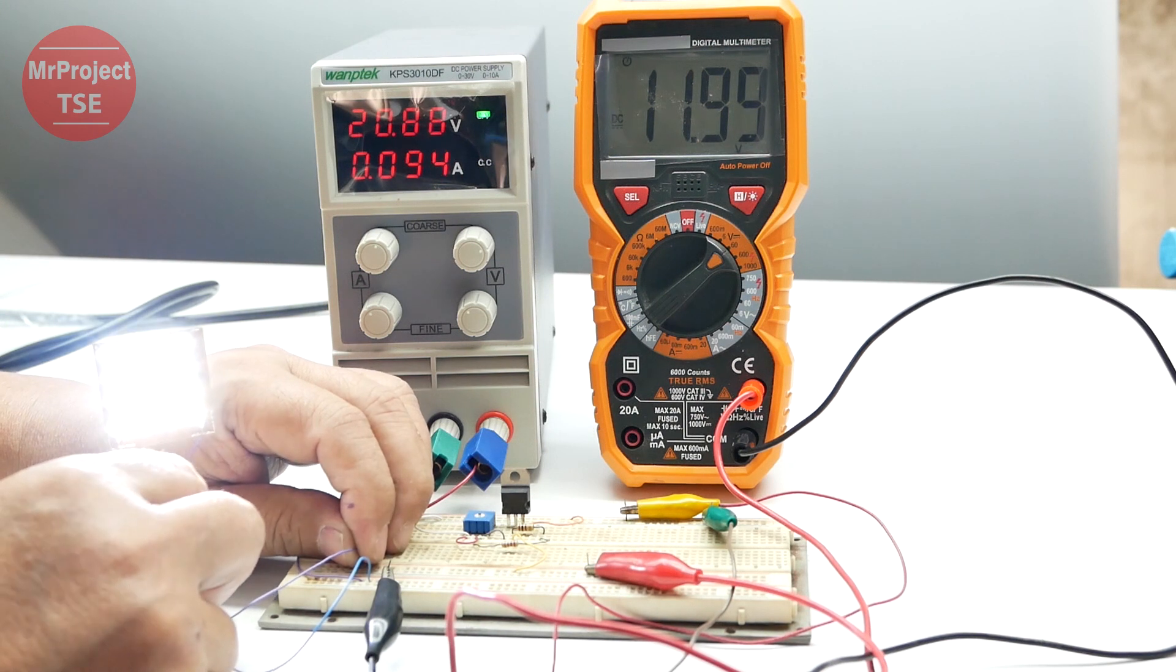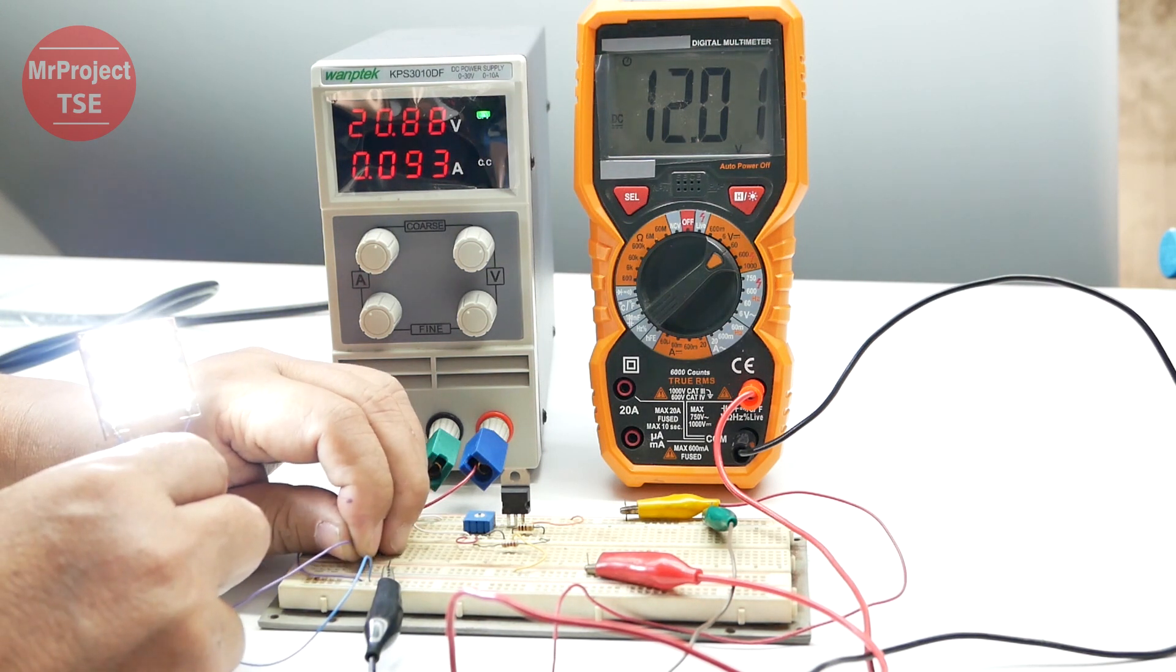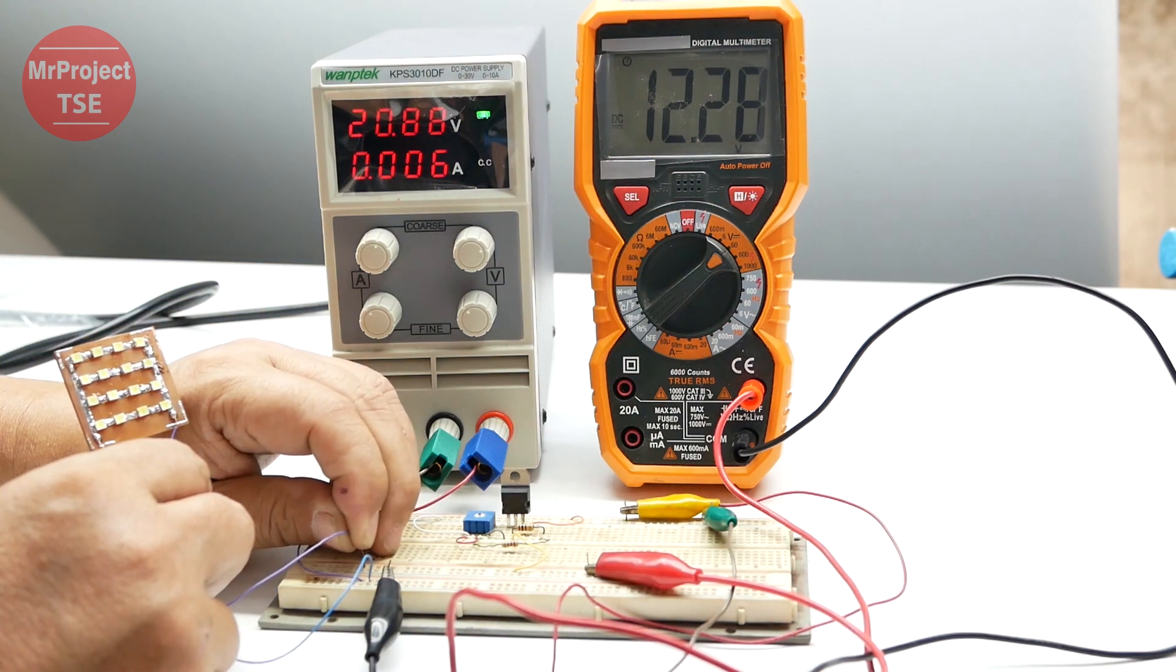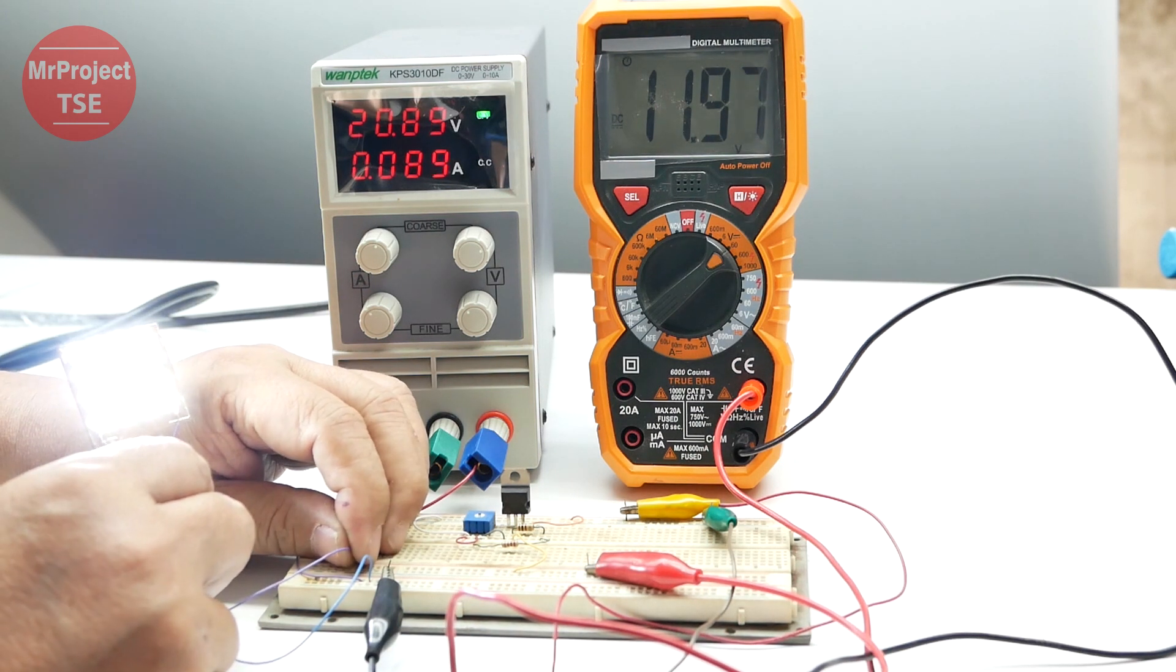After that, take the load out of the circuit and look at the output voltage. The output voltage varies as manual.